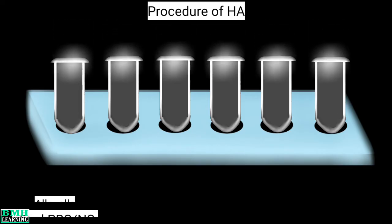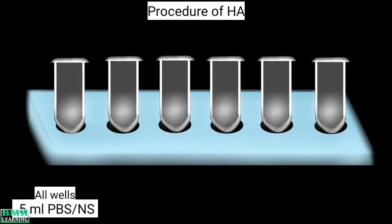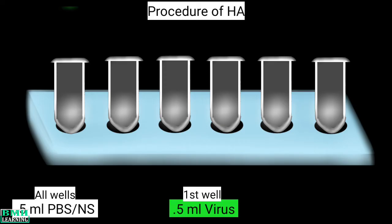First, we take a microtiter plate and place microwells in the tray. We add 0.5 ml of normal saline to all wells. After this, we add 0.5 ml of the sample containing virus to the first well.